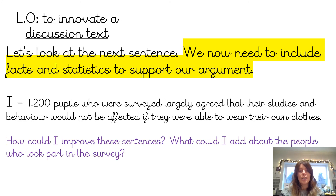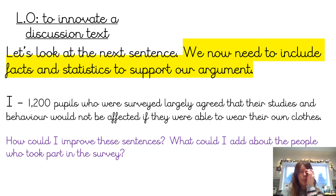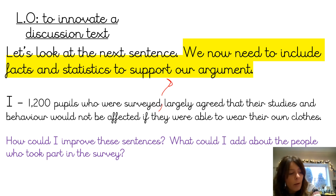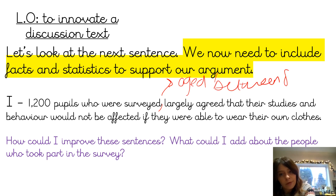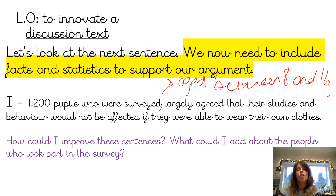We now need to include some facts and statistics to support our argument. I've had a go: '1,200 people who were surveyed largely agree that their studies and behaviour would not be affected if they were able to wear their own clothes.' I'm going to add more information — who was surveyed and what age range. I could add a relative clause: '1,200 people who were surveyed, aged between 8 and 16, largely agree that their studies and behaviour would not be affected if they were able to wear their own clothes.'